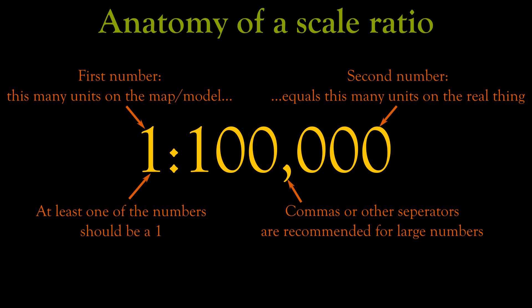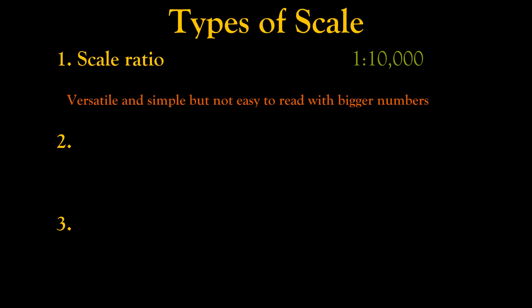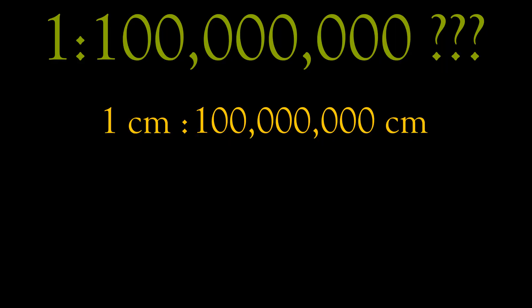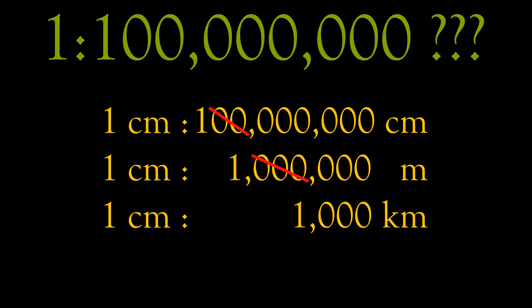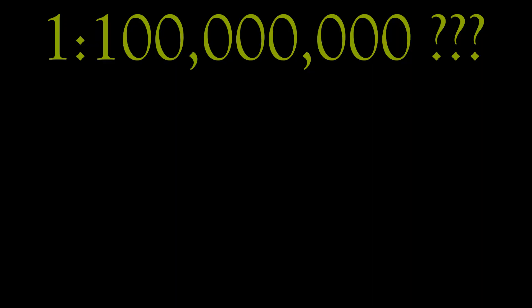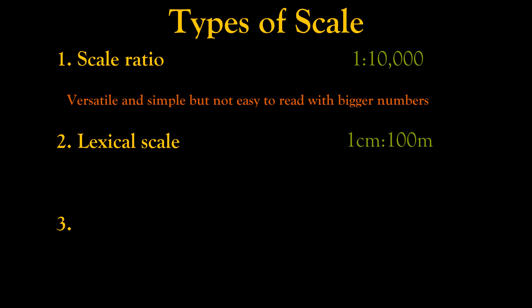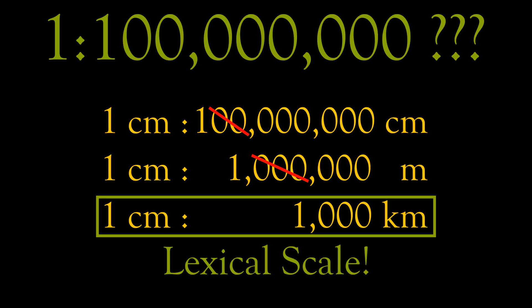Scale ratios are versatile and simple and can be used in a lot more things than maps. For example, if you're making a diagram of something really small, like a microchip or a virus, you want to make it bigger than actual size, so you could write a 10 to 1 or 1,000 to 1 scale. Just remember that when you're writing a scale ratio, the first number is for the diagram and the second number is for the real thing, and at least one of the numbers should be a 1. Scale ratios do run into problems as the numbers get bigger — what are you going to do when you see a scale like 1 to 100 million? The usual thing to do is to convert downwards by crossing off factors of 10. If 1 centimeter on the map equals 100 million centimeters, that means it's 1 million meters or 1,000 kilometers. The nice thing to do is to create what's called a lexical scale, using words and units to create a ratio, like we just did with that cancellation.